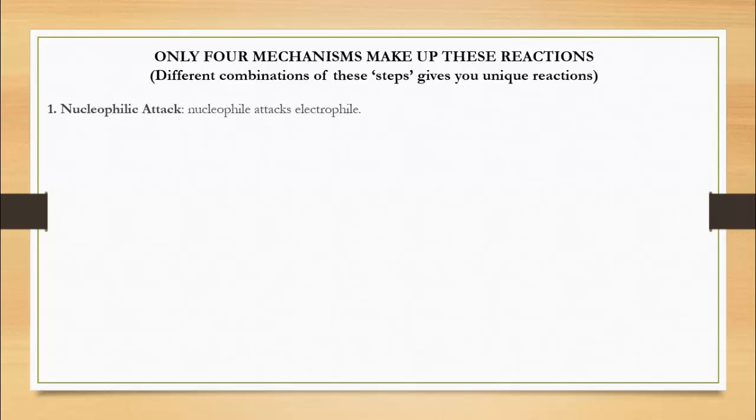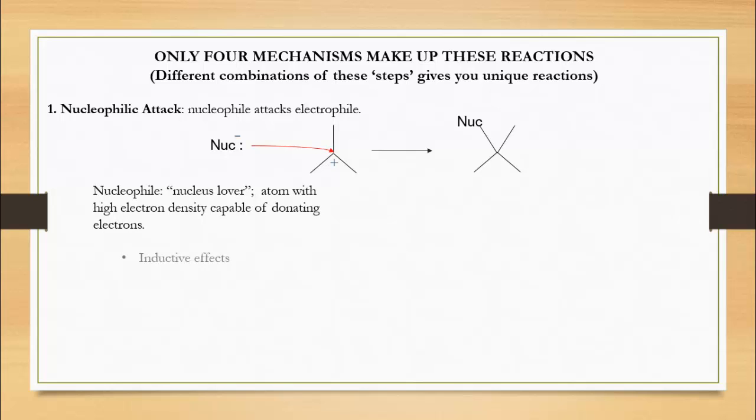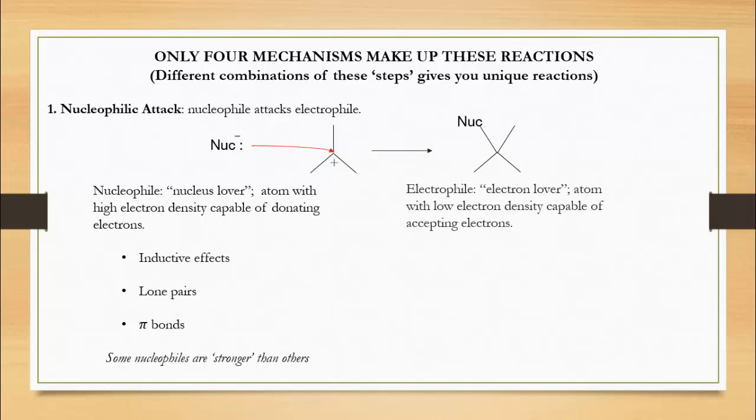The first mechanism is a nucleophilic attack, where a nucleophile attacks an electrophile. Nucleophile translates to nucleus lover. It's an atom with high electron density, and this density can be the result of multiple things: inductive effects, lone pairs, or pi bonds.